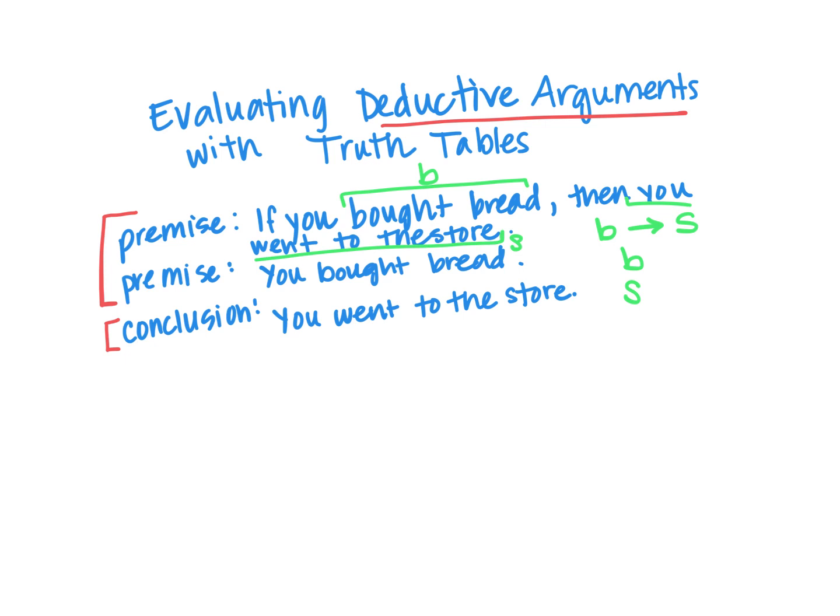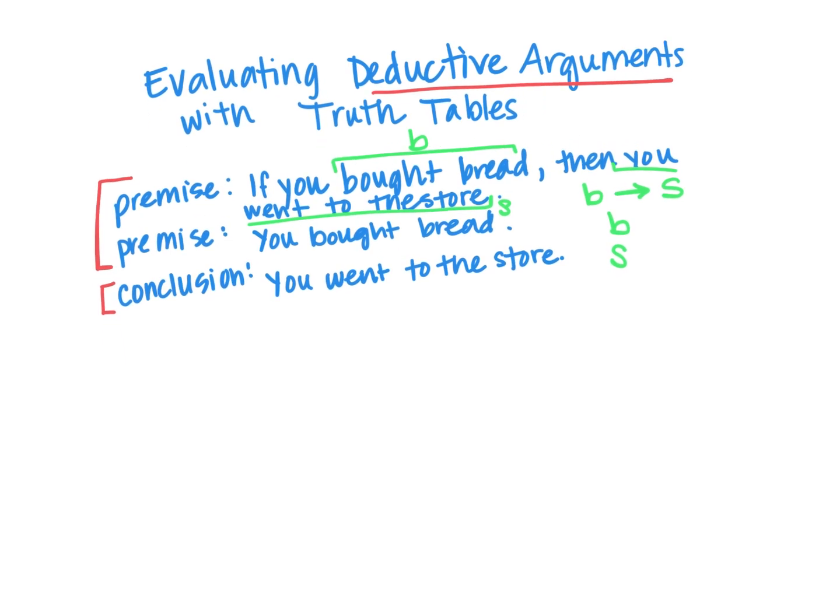So what we want to do to test that validity is we're going to look at the combination of these premises if it implies the conditional. That is, we want to show that B implies S and B, so those two premises together will get us our conclusion.